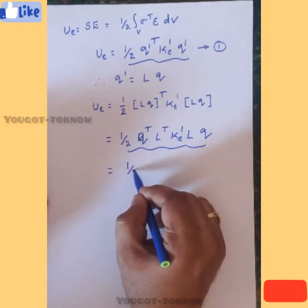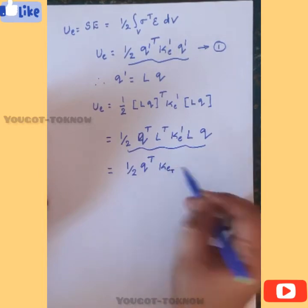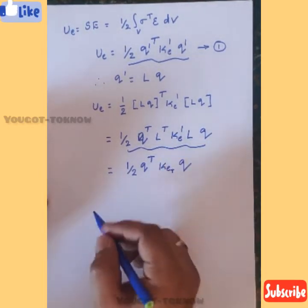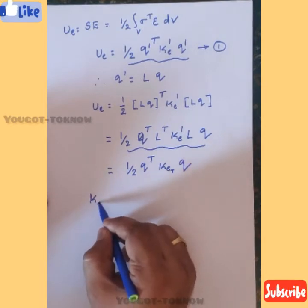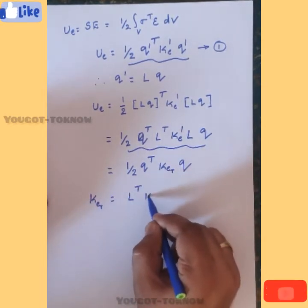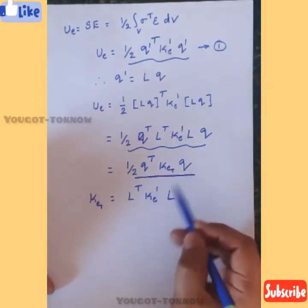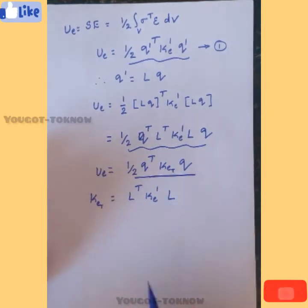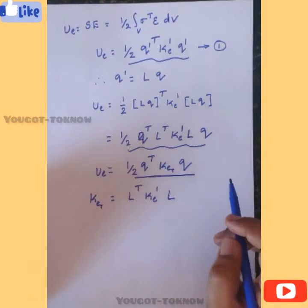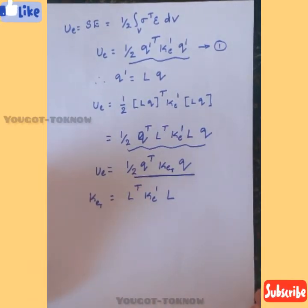So I can write this as (1/2) * q_transpose * Ke_truss * q. Therefore, Ke for the truss element equals L_transpose * Ke_dash * L. Always you should bring it to this format, because q is a dependent parameter depending upon the applied load.